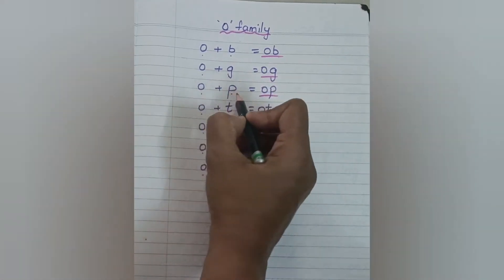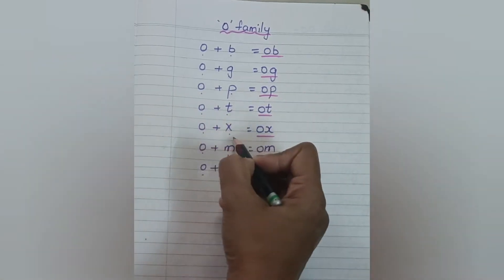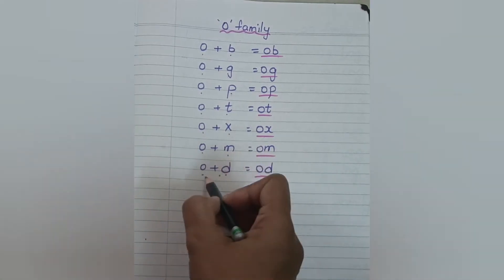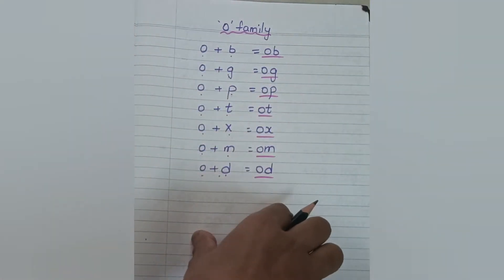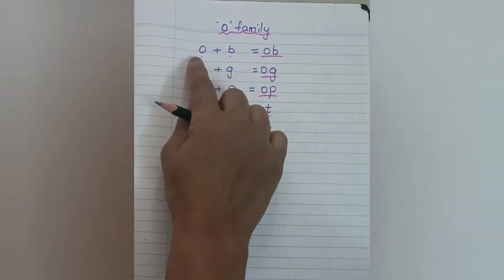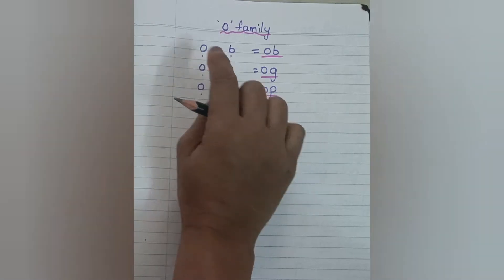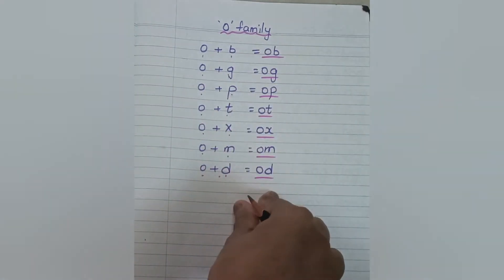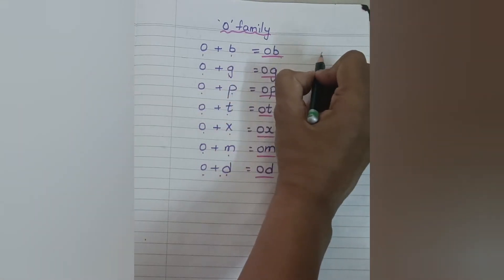Let us start. OB, OG, OP, OT, OS, OX, OM, OD — these are the two-letter words of O family. Firstly we will introduce them with individual sounds, then after practicing for two to three days, give a list of these two letters only, so that the child must be able to read them directly.